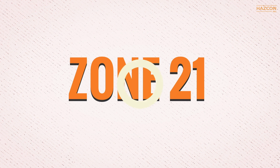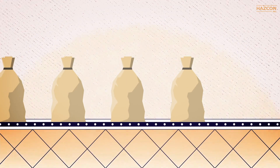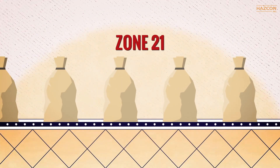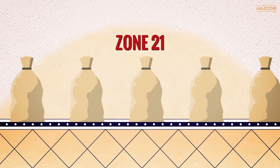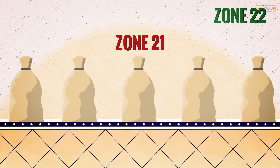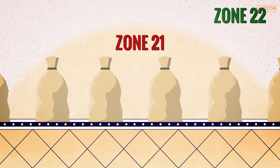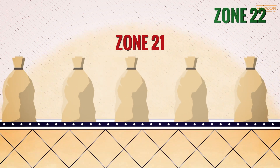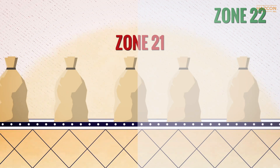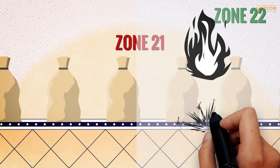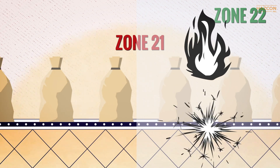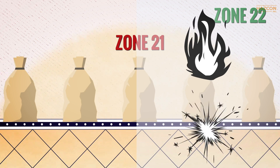Zone 21 is defined as an area in which an explosive dust atmosphere, in the form of a cloud of dust in the air, is likely to occur occasionally in normal operation. Electrical or non-electrical equipment used in Zone 21 must not become a source of ignition in the form of hot surfaces or sparks.